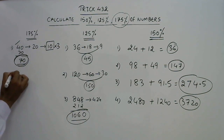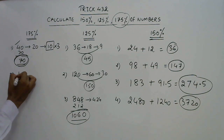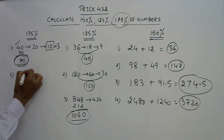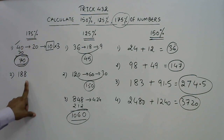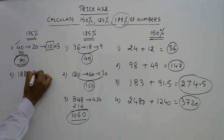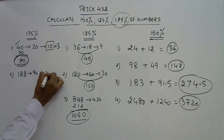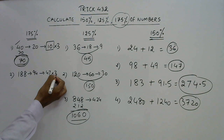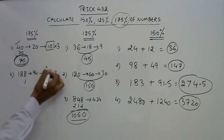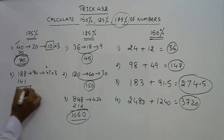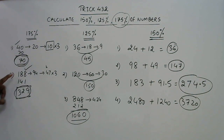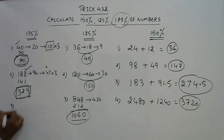Let's try 175% of 188. Take half to get 94, take half again to get 47, then multiply 47 by 3 to get 141. Add 188 and 141 to get 329. So 175% of 188 is 329.